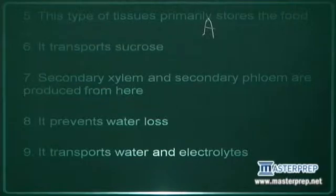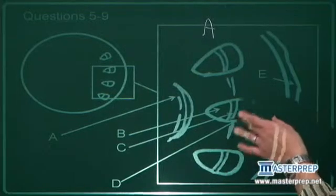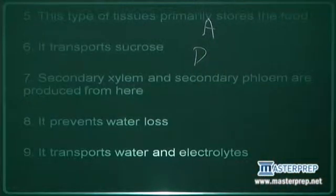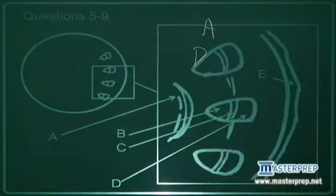Number six, transport sucrose. Transport sucrose, nutrients, sap, is the role of the phloem, which is D. Number seven, secondary xylem and secondary phloem are produced from here. This is the function of the lateral cambium, here, C.